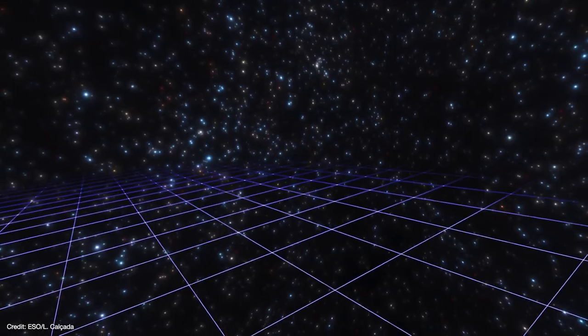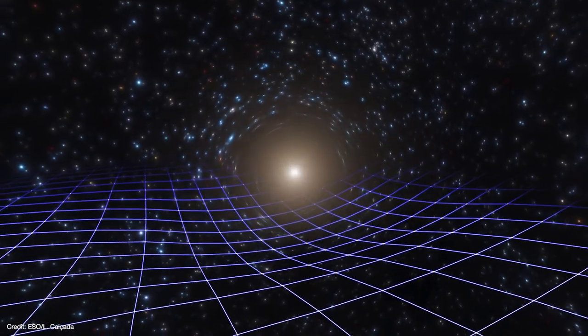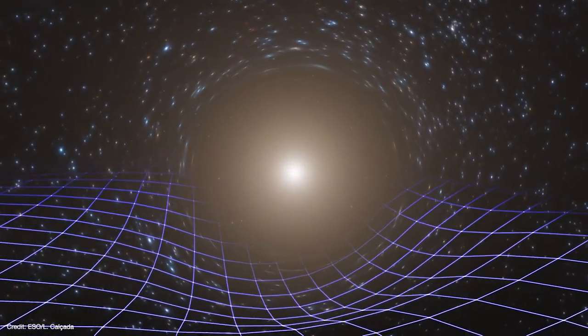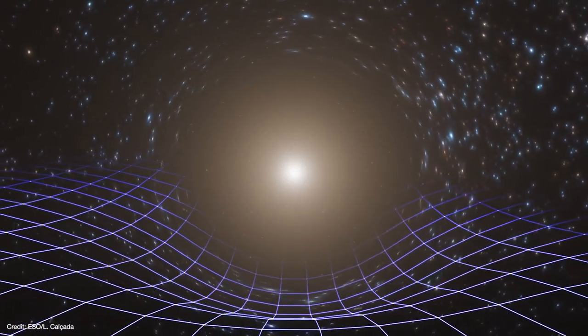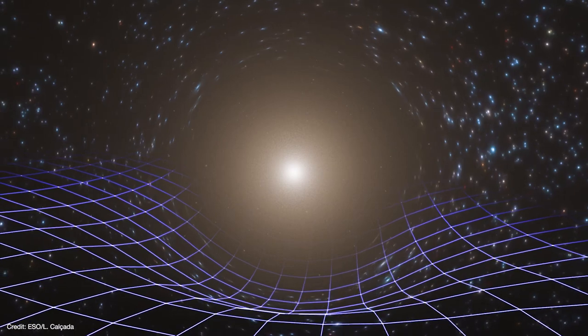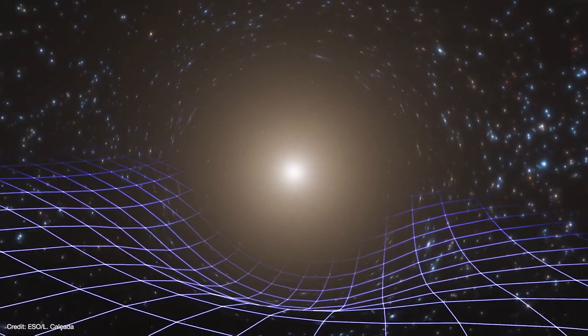First, there's the whole gravitational lensing thing. It's a prediction of Einstein's theory of relativity, which states that matter and energy bend the spacetime around it. Anything traveling through that curved spacetime, including light, finds its path deflected as well.